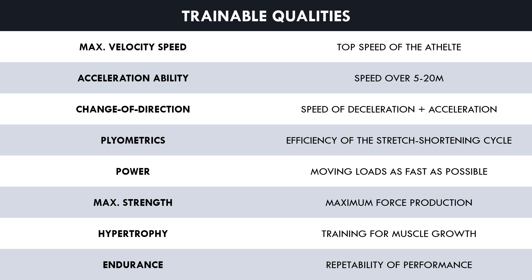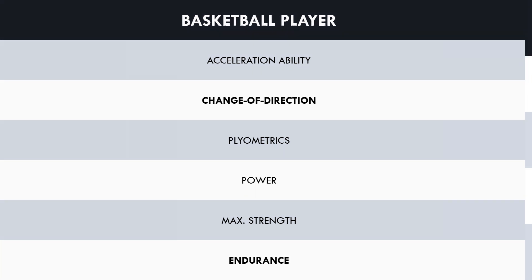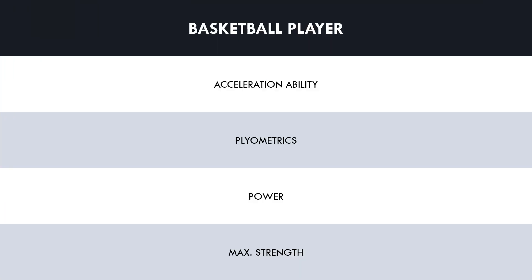Let's use an example athlete and select qualities which they will train during strength and conditioning training. For this example, we will use our basketball player. A basketball player can benefit from acceleration training, change of direction training, plyometrics, power training, max strength training, and endurance. However, change of direction ability and endurance will already be trained during sport practice, so only acceleration, plyometrics, power, and max strength will be trained in our strength and conditioning sessions.